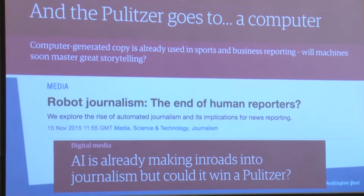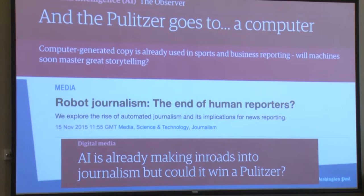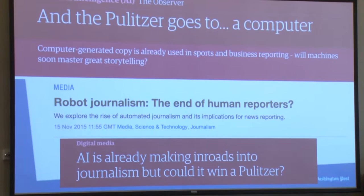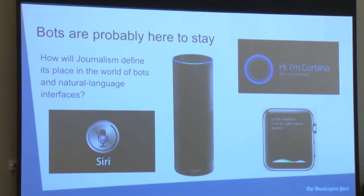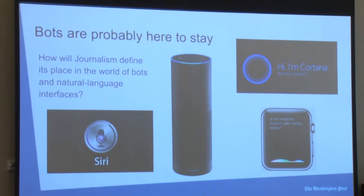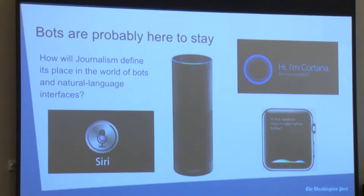If you look at the media coverage of automated journalism, we have robot journalists next in line for the Pulitzer, soon to write 90% of online news content, or the end of human reporters as we know it. This is definitely not the case. Thinking seriously about the subject means looking past these headlines to the real substance. From Siri, Cortana, Alexa, to whatever Google will inevitably name their voice assistant, bots and natural language interfaces are here to stay. We should be actively thinking about our place in that world, where editorial decisions lie, and how much give and take we'll have with the makers of these platforms.